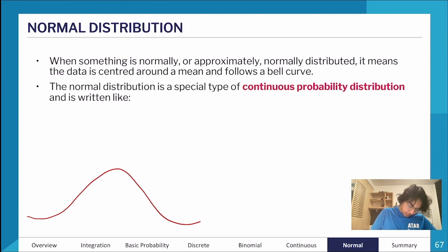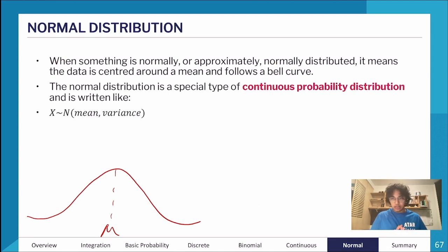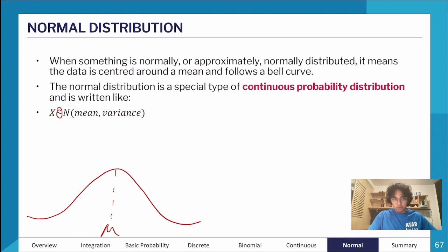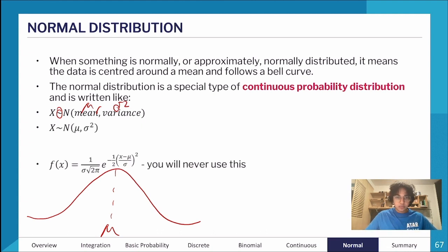These are the sorts of bell curve shapes, where the center is the mean. It's generally written similarly to how we write binomial notation — in this case we write X distributed as N(μ, σ²), where σ² is the variance.